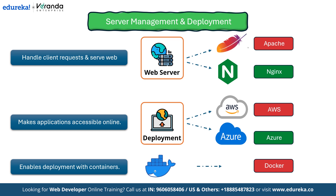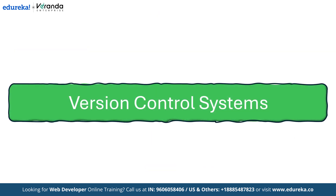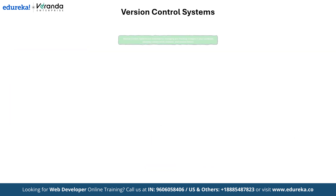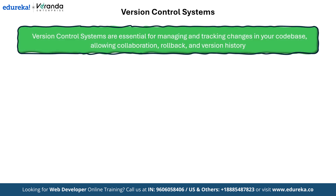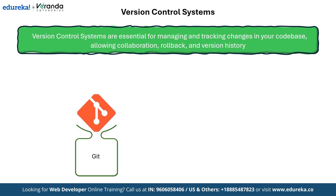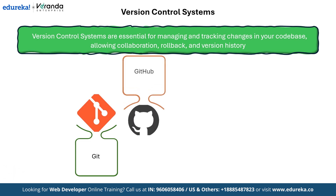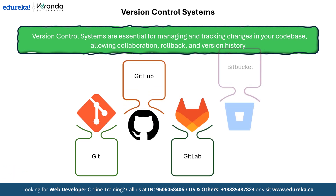Now let's move on to version control systems, which are essential for tracking changes in your code over time. They allow developers to collaborate, revert to previous versions and manage different versions of their application efficiently. One of the most widely used version control systems is Git, which enables local tracking of changes and branching for feature development. To manage and share your Git repositories, platforms like GitHub, GitLab and Bitbucket come into play.